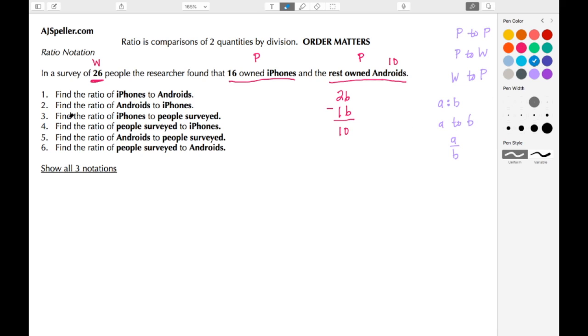Let's look at each one of our questions here. Number one, we need to find the ratio of iPhones to Androids. Well, that is going to be a part-to-part, so the number of iPhone users is 16, the number of Android users is 10. And here we see that we have two even numbers which means they can be divided by 2. 16 divided by 2 is 8 and 10 divided by 2 is 5.